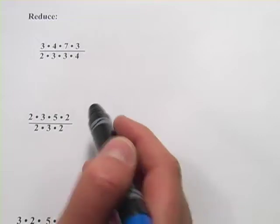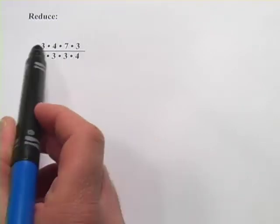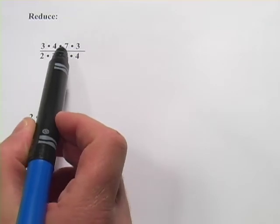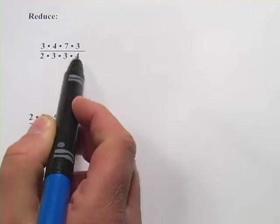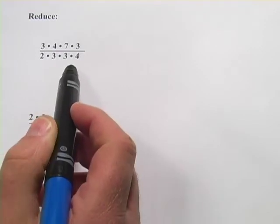So here are some funny-looking problems, and what this is saying is that the top of the fraction is 3 times 4 times 7 times 3, and the bottom of the fraction is 2 times 3 times 3 times 4, so they've kind of been broken up into some of their factors.